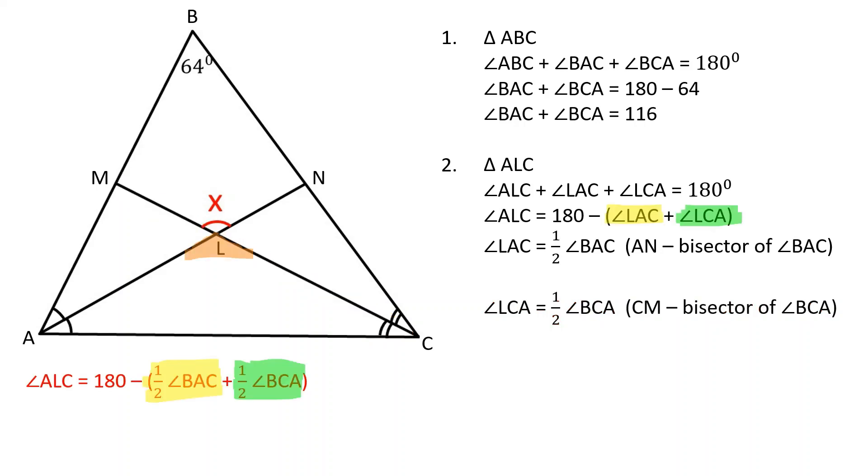We can plug the new values into our expression. Let's factor out 1 over 2, and since angle BAC plus angle BCA is equal to 116 degrees, we can calculate angle ALC.